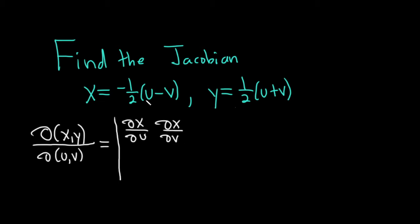In the second row, you do the same thing for y. So it's the partial of y with respect to u and the partial of y with respect to v.